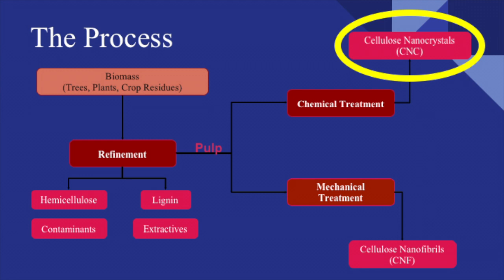Seen here is the overall process. Refinement of biomass, including trees, plants, and crop residues, is the process of removing the lignin, hemicellulose, extractives, and inorganic contaminants. This is typically executed in a pulp mill. Pulp, which is approximately 85% cellulose, is either treated chemically to produce cellulose nanocrystals, or mechanically to produce cellulose nanofibrils. Our interest lies with the cellulose nanocrystals, so we will discuss the details of the chemical treatment.